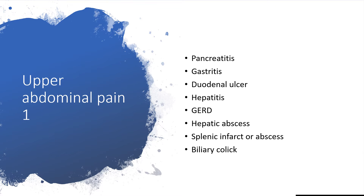If it's the upper part of the abdomen, it could be pancreatitis — inflammation of the pancreas. It could be gastritis, affecting the stomach. It could be duodenal ulcer. It could be hepatitis. It could be gastrointestinal reflux disease. Liver abscess, splenic abscess or infarct, biliary colic. It could be gastric ulcer also.